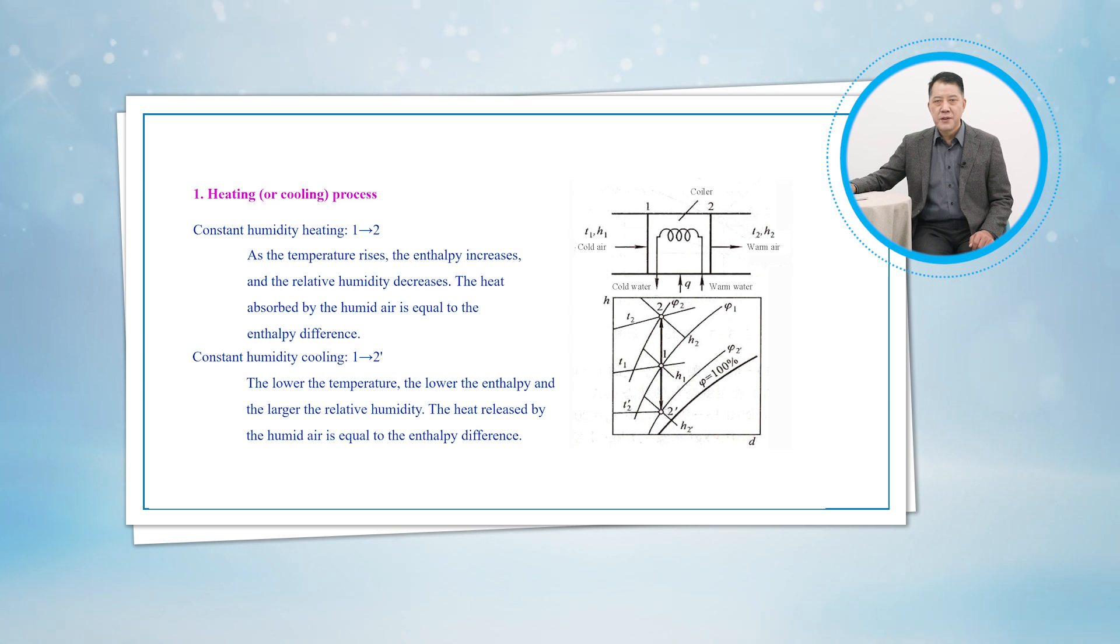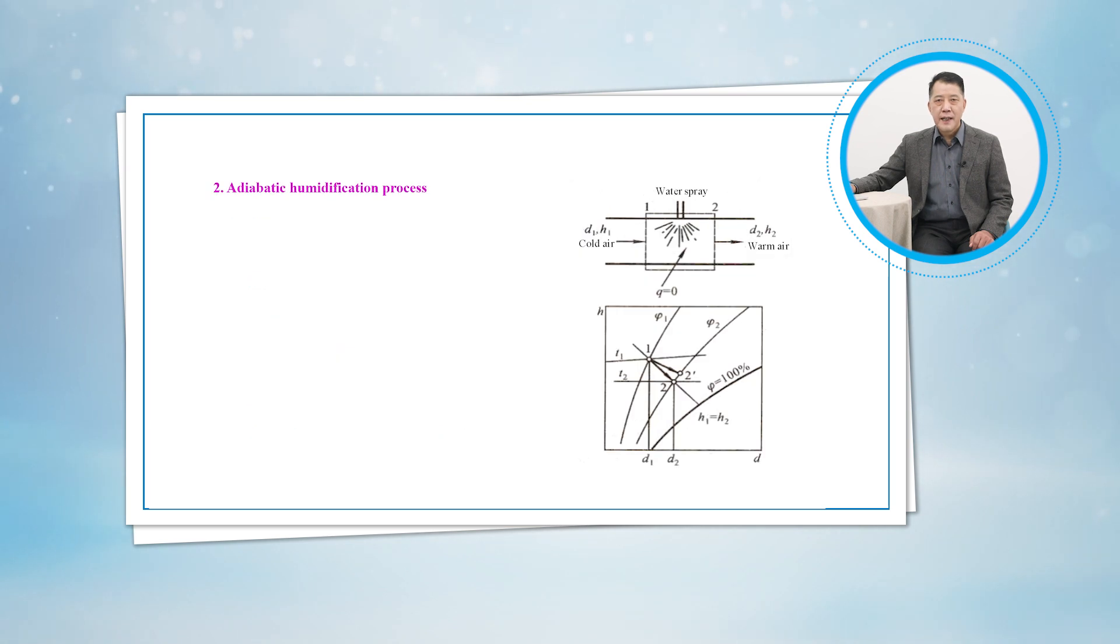Cooling can be accomplished by passing the air over coils through which a refrigerant or chilled water flows. Secondly, let's talk about the atmospheric humidification process.